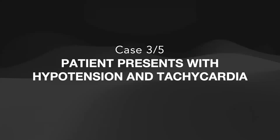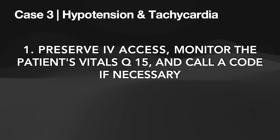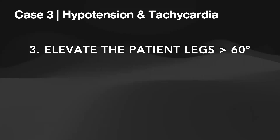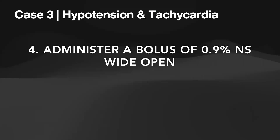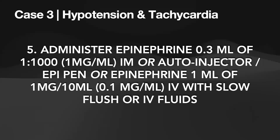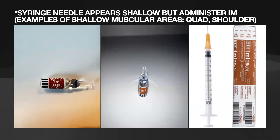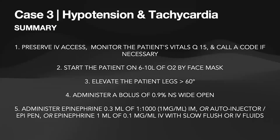Case number three: a patient presents with hypotension and tachycardia. First, preserve IV access, monitor the patient's vitals, and call a code if necessary. Second, start the patient on 6 to 10 liters of oxygen. Third, elevate the patient's legs more than 60 degrees. Fourth, administer a bolus of normal saline wide open. Fifth, administer epinephrine 0.3 mils of 1 in 1000 IM, or use an EpiPen, or administer epinephrine 1 milliliter of 1 milligram per 10 mils IV with a slow flush or with IV fluids. Epinephrine 1 in 1000 is included in the anaphylaxis tray in an ampule. Split the ampule along the neck and dispose of the top part in the sharps container. Aspirate the epi from the ampule and administer 0.3 mils IM. While the syringe appears shallow, administer IM. Here is the summary slide for case number three.